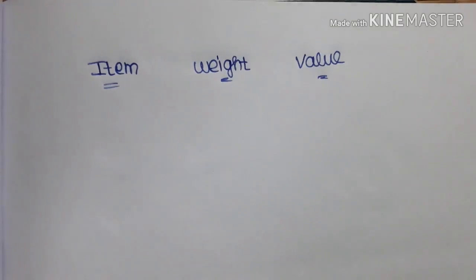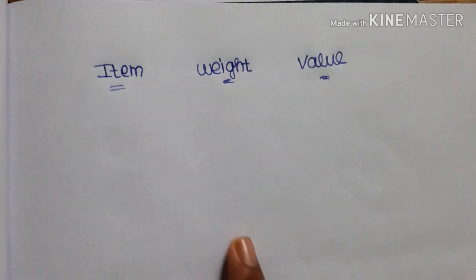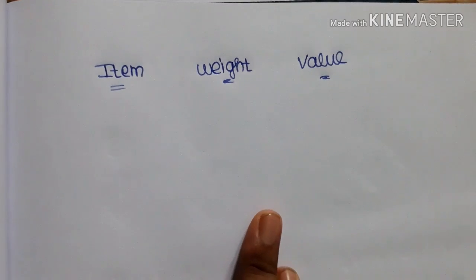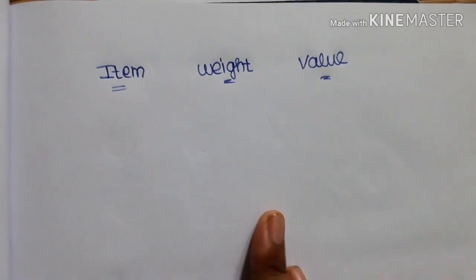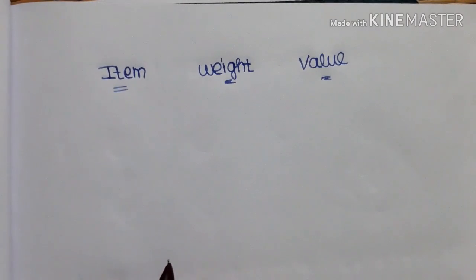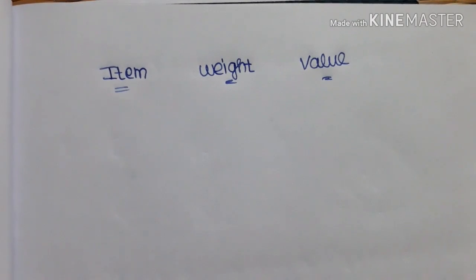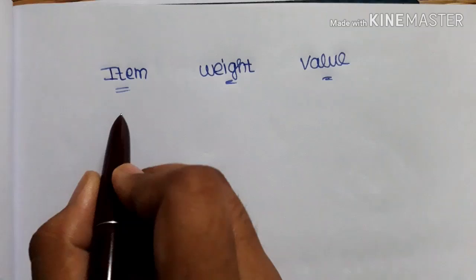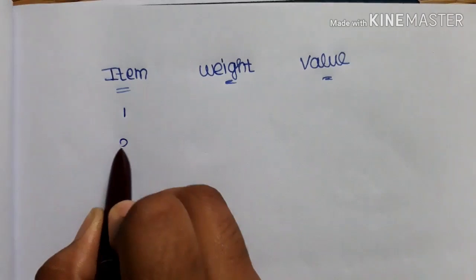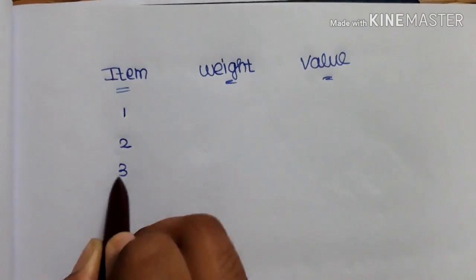First, we will solve the item, weight and value. First, we will solve the combinations. First, we will solve the term.